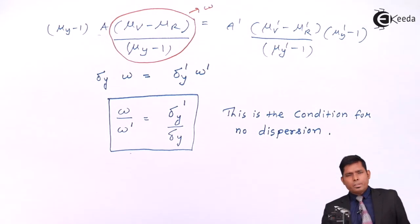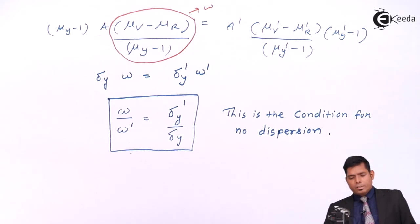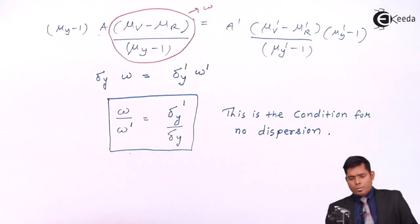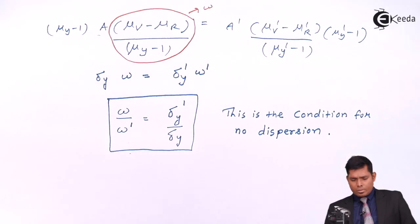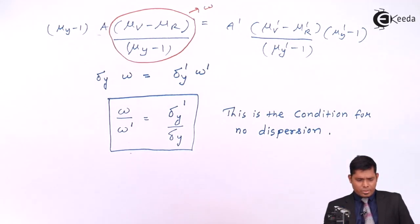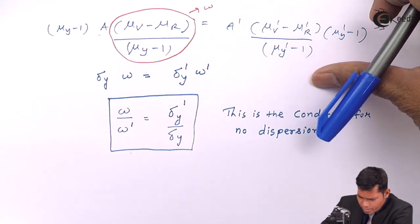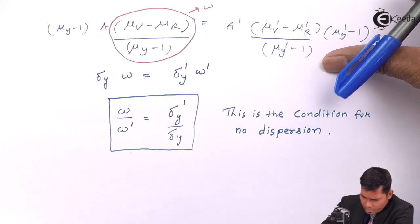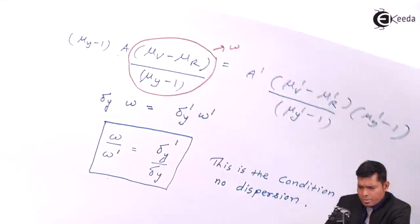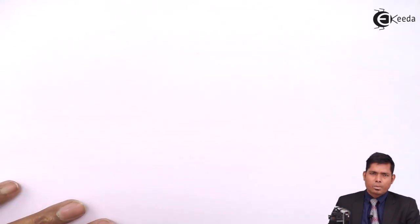So the condition for no dispersion is: omega over omega prime equals delta_y prime over delta_y. This is the condition — if you don't want dispersion, this condition should be satisfied: omega over omega prime should be equal to delta_y prime over delta_y. Now we will proceed to see what the net deviation is.